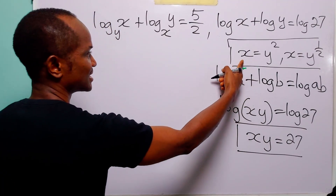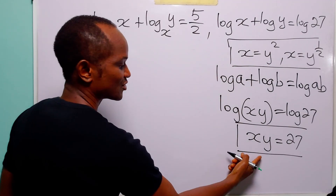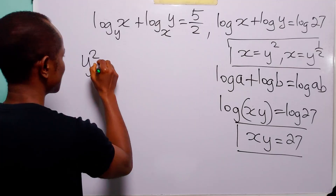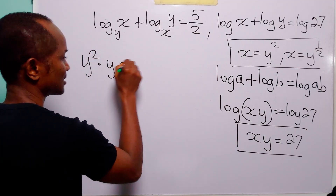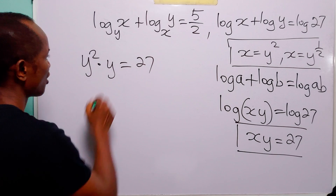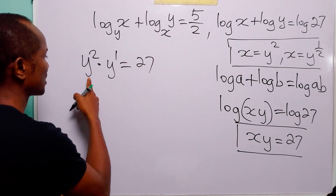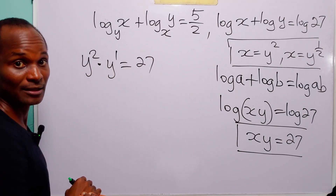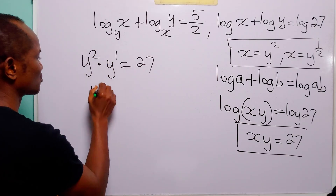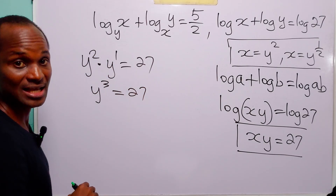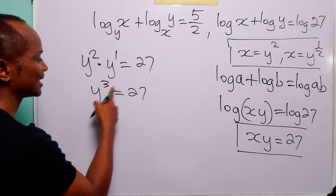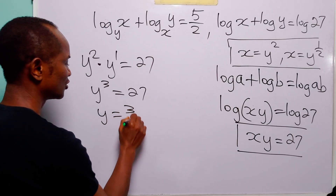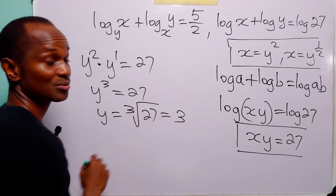With the first equation x equals y squared, we substitute into xy equals 27 to get y squared times y equals 27. Since y squared times y to the power 1 means we add the exponents, we have y to the power 3 equals 27. Taking the cube root of both sides, y equals the cube root of 27, which equals 3.